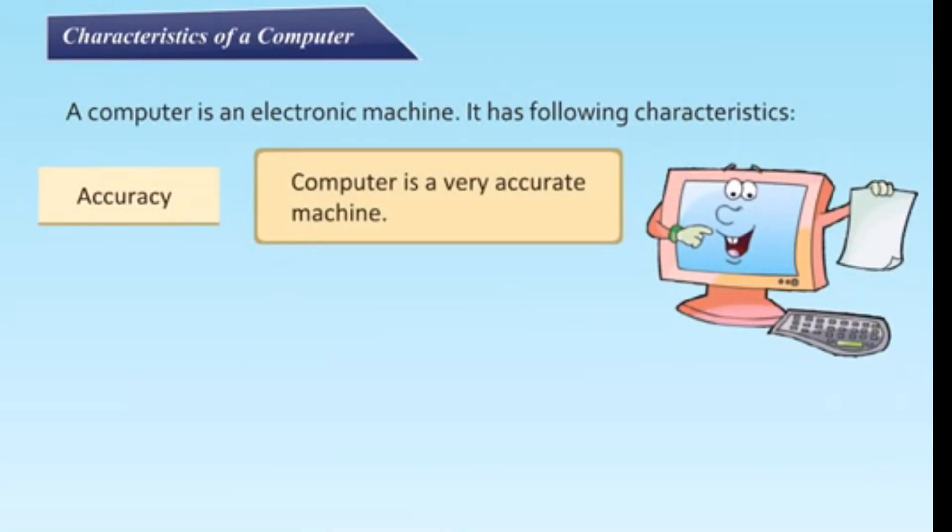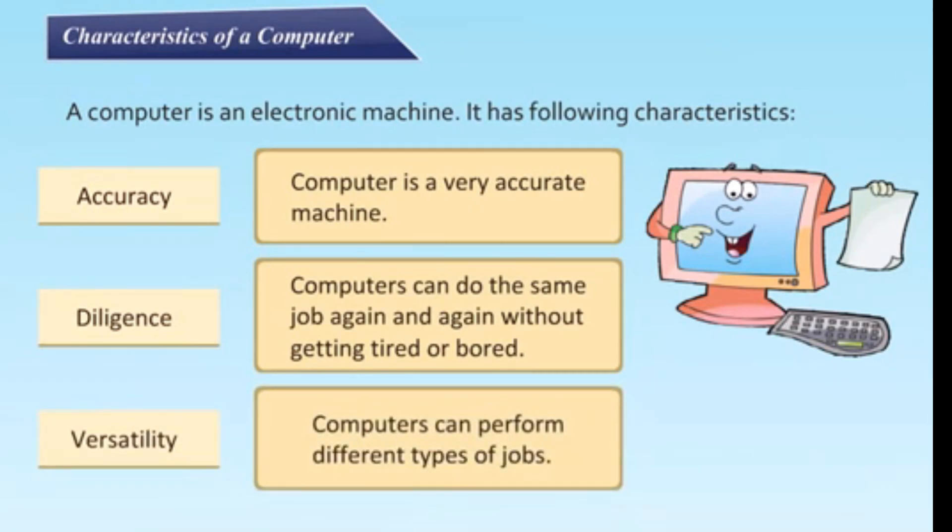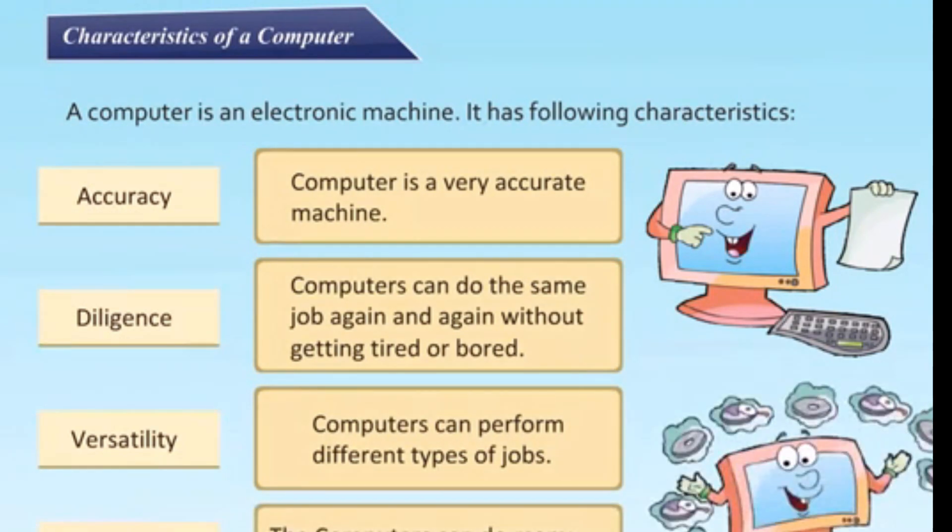Accuracy: computer is a very accurate machine. Diligence: computers can do the same job again and again without getting tired or bored. Versatility: computers can perform different types of jobs. Multitasking: the computers can do many different jobs at the same time.